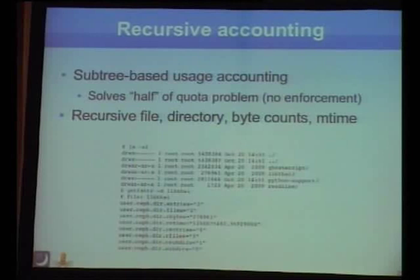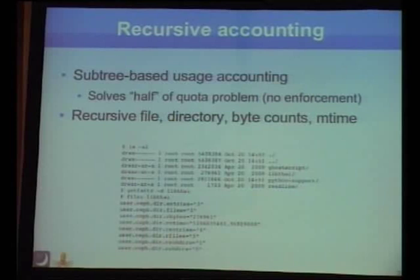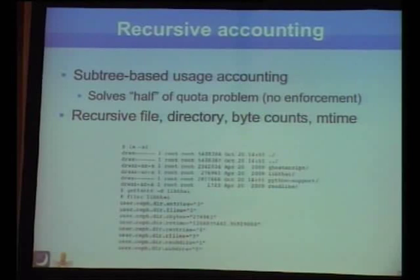The file directory size in systems like ext3 tells you how many blocks on disk are used for directory metadata. Ceph keeps the blocks field at zero for directories, so du adds up only files and gives consistent results. Looking at extended attributes, you can see recursive file and directory counts, plus a timestamp of the most recent file modified within that portion of the hierarchy—useful for backup programs scanning for changes to easily find where files have been modified.